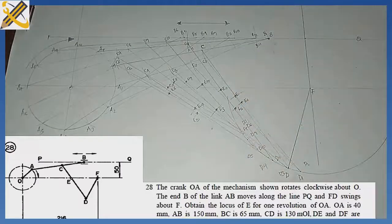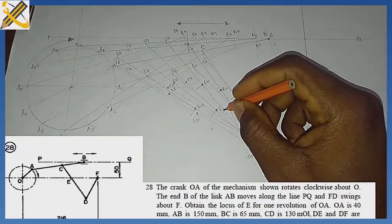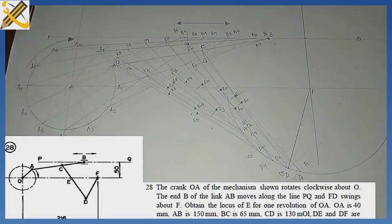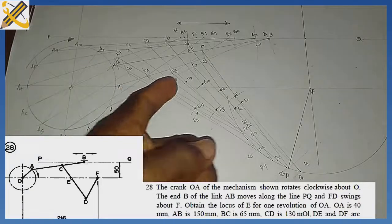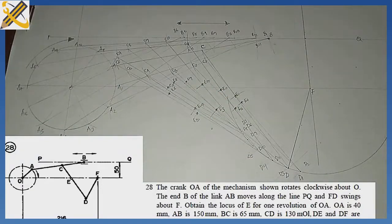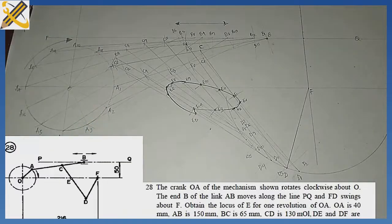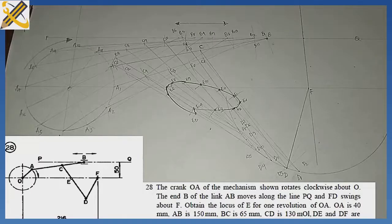So we now have E, E1, E2, E3, E4, E5, E6, E7, E8, E9, E10, and E11. All you have to do now is pick your French curve or flexible curve and join each of the points together to get the locus of point E. That is the curve made by point E — the solution to this particular problem. It's actually easy if you follow the procedures one after the other. Kindly subscribe to this YouTube channel and refer it to friends who might be in need of it.